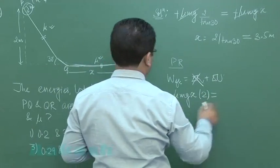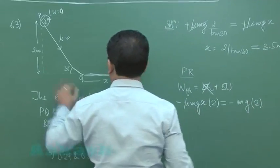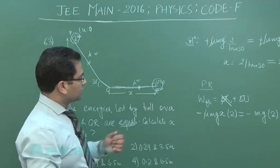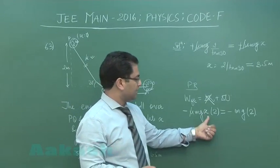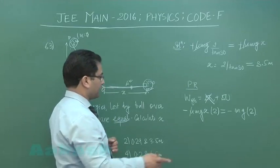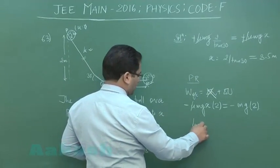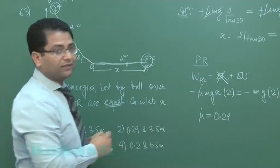Work done by the friction - if I calculate this work done, minus mu mg X, and even this would be same so multiplied by 2. The change in potential energy is minus mg height. The height is 2, so this is also now a very simple calculation. X has already been calculated here. Put the value and you get the value of mu on solving.